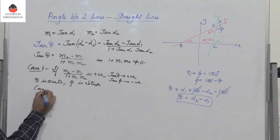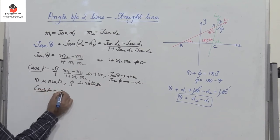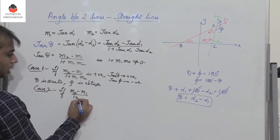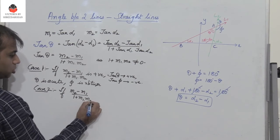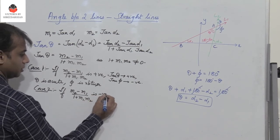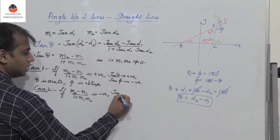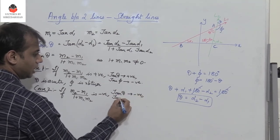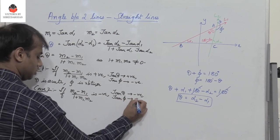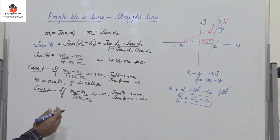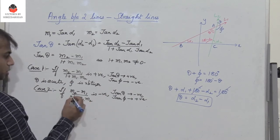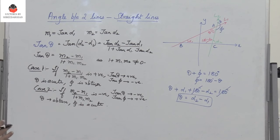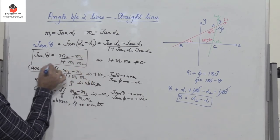Case 2: if (m2 minus m1) divided by (1 plus m1 m2) is negative, then tan(theta) is negative and tan(phi) would be positive. In this case, theta is obtuse whereas phi is acute.